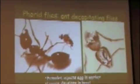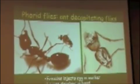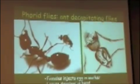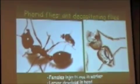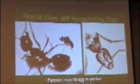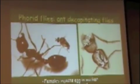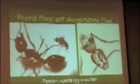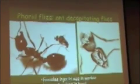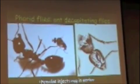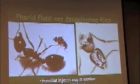That egg hatches into a larva, which then migrates up into the head. And that fly completes its development inside the head by eating the tissue of the head of the fire ant.